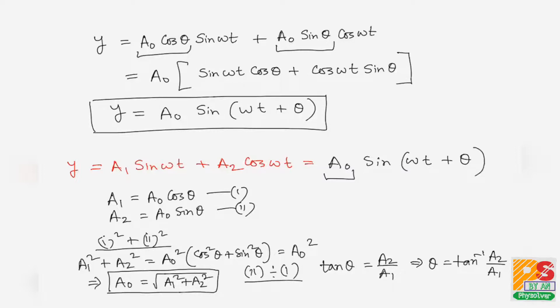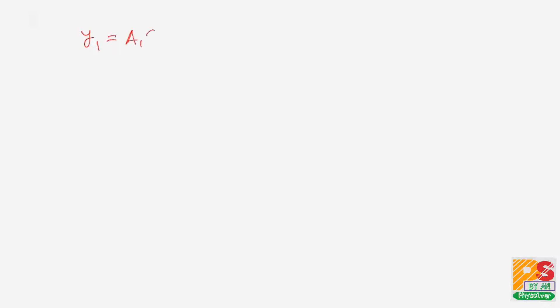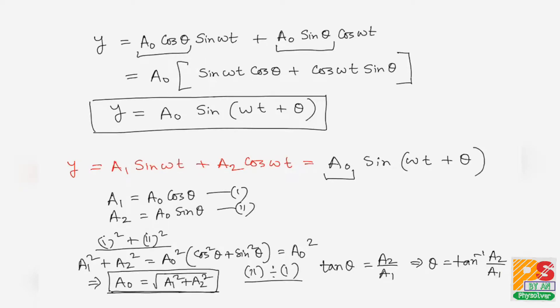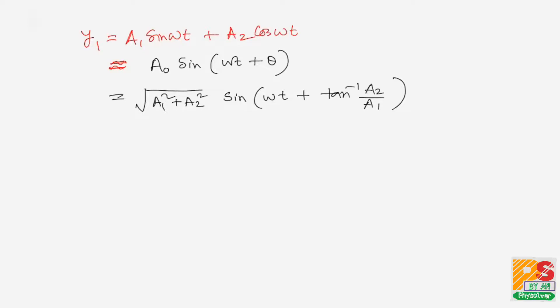Therefore, the equation y = a1·sin(ωt) + a2·cos(ωt) can be written as y = a0·sin(ωt + θ), where a0 = √(a1² + a2²) and θ = tan⁻¹(a2/a1). I generally ask medical students to remember this conversion.